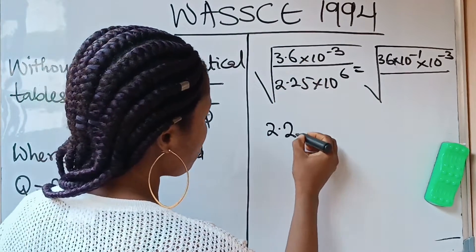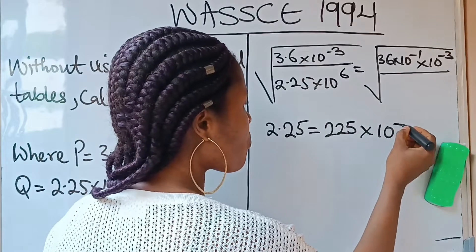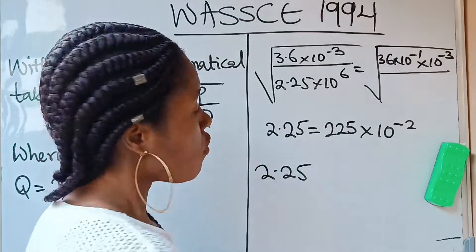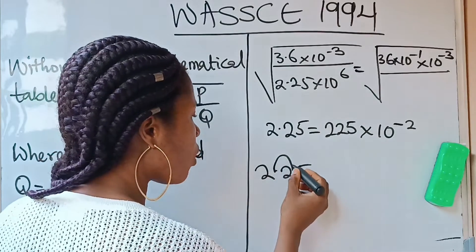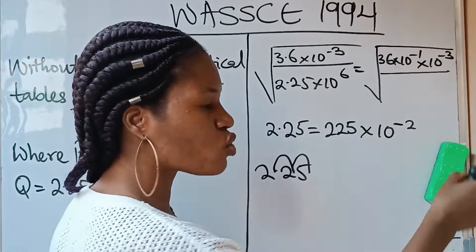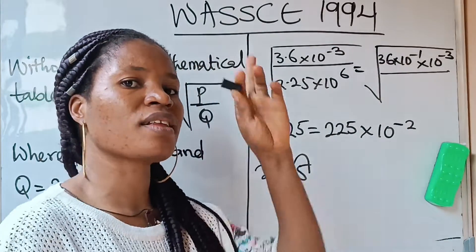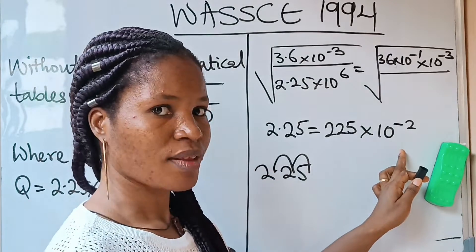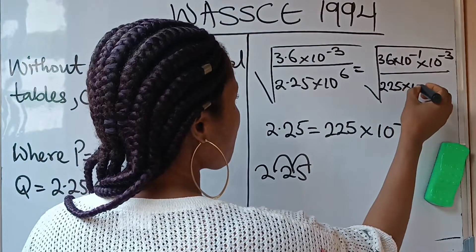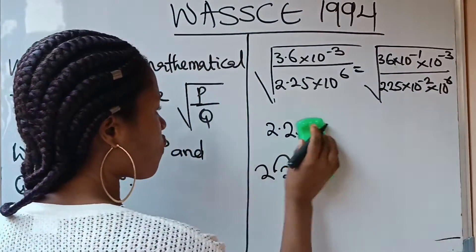This 2.25 becomes 225 times 10 raised to the power of minus 2. For me to get 225 from 2.25, I need to shift this decimal point 1, 2 — two places to the right. That's why we have negative 2. We shifted it to the right, that is why we have negative. So 2.25 equals 225 times 10 raised to the power of minus 2, and this replaces the 2.25, then times 10 raised to the power of 6.